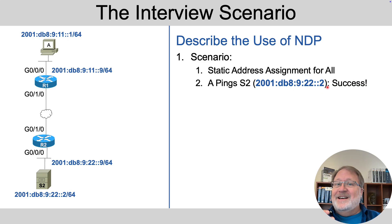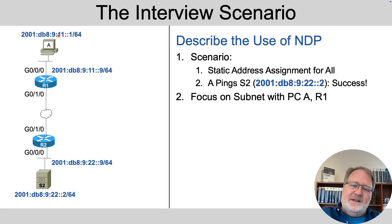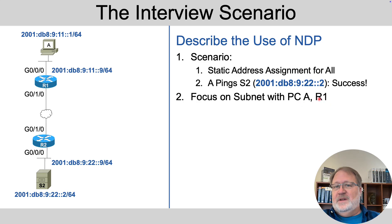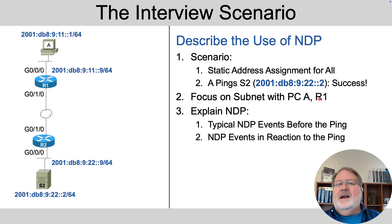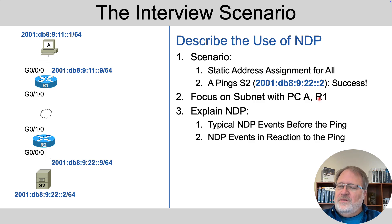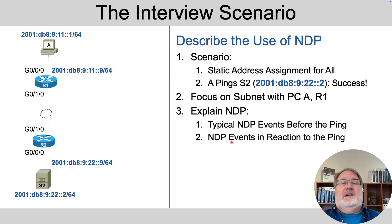So you can infer some things knowing that, and they say: let's focus on this top subnet with PCA and router R1 in it for our discussions of NDP. Explain NDP and break it down for the events that happened before the ping — like overhead — and then the events that happened in reaction to the ping to support it.